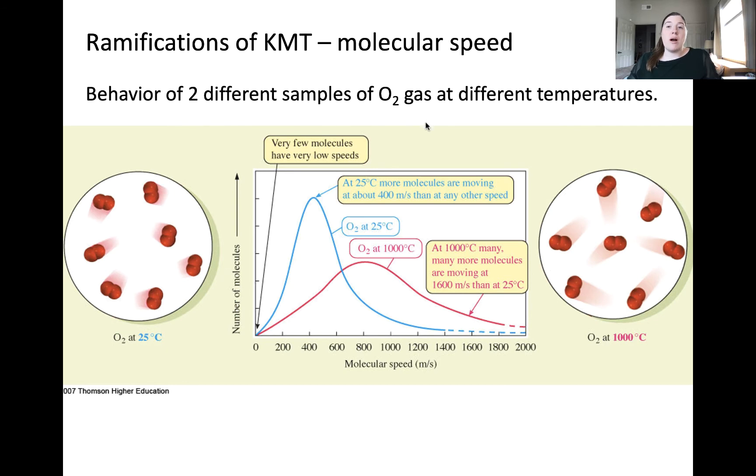This is important because it means that not all molecules in a gas sample are moving at the same speed. The most probable or most common speed is represented by the maximum value of each curve. The peak of the blue curve is the most probable speed for oxygen gas at 25 Celsius, whereas the peak of the pink curve represents the most probable speed for oxygen gas at 1000 Celsius. You will notice that the most probable speed is faster for the higher temperature gas sample, and also that the distribution is more broad, meaning more spread out, for the higher temperature gas sample.